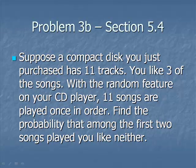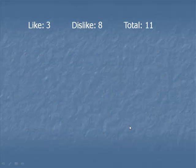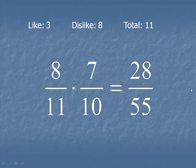Now let's go ahead and find the probability that you like neither of the first two songs. The key number here is the eight that you dislike. The probability you dislike the first song is eight out of 11, and we multiply that by the probability you dislike the second song, which is seven of the remaining 10. Multiply, reduce to lowest terms, and we get 28 over 55.